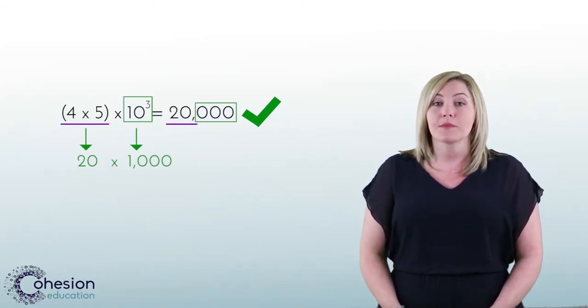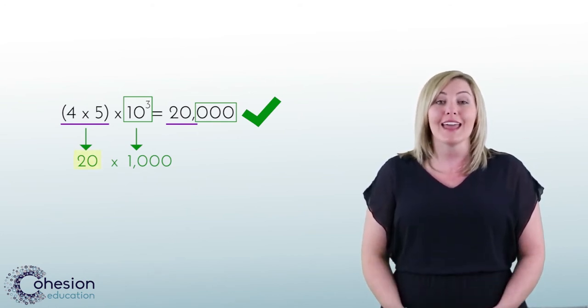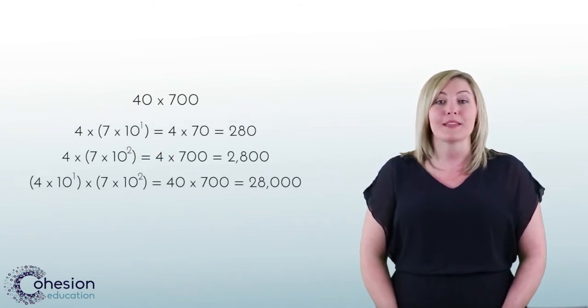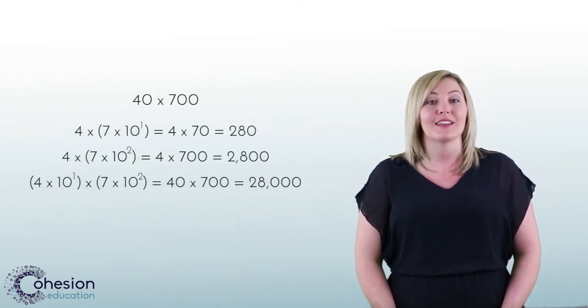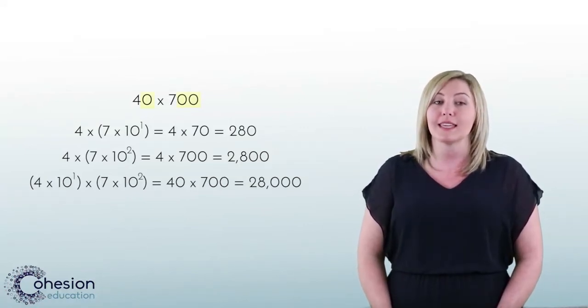To address this problem, always have students write down the basic fact first, then add on the zeros. Another common error that students can make is not adding on enough zeros when multiplying by two numbers with zeros at the end.